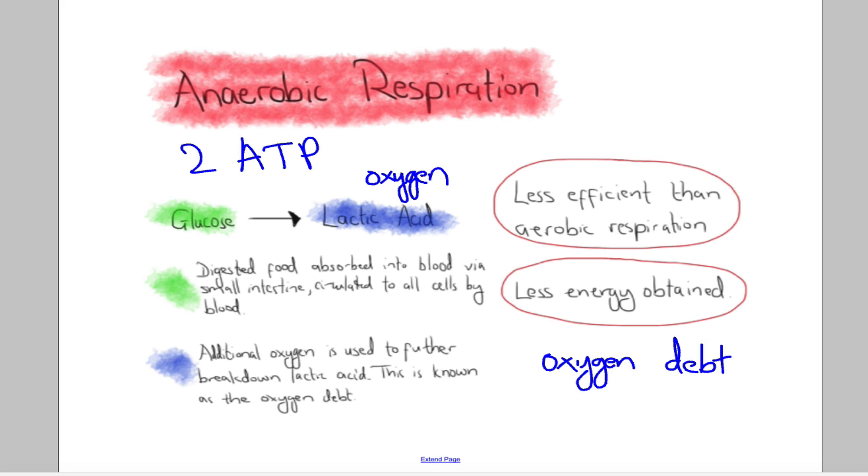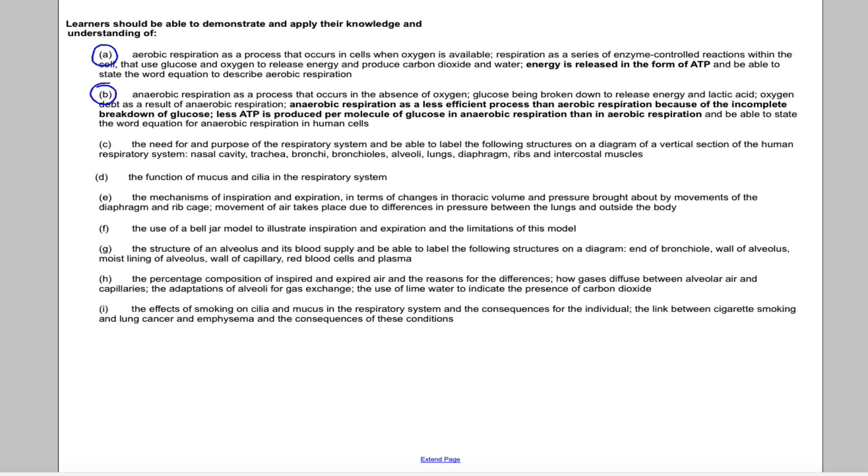Just looking back very quickly to finish, to double check we've covered what we should have from the specification. Aerobic respiration is a process that occurs in cells when oxygen is available. It's a series of enzyme-controlled reactions that uses glucose and oxygen to release energy from glucose and produce carbon dioxide and water. That energy is released in the form of ATP, and you need to be able to state the word equation as shown there.